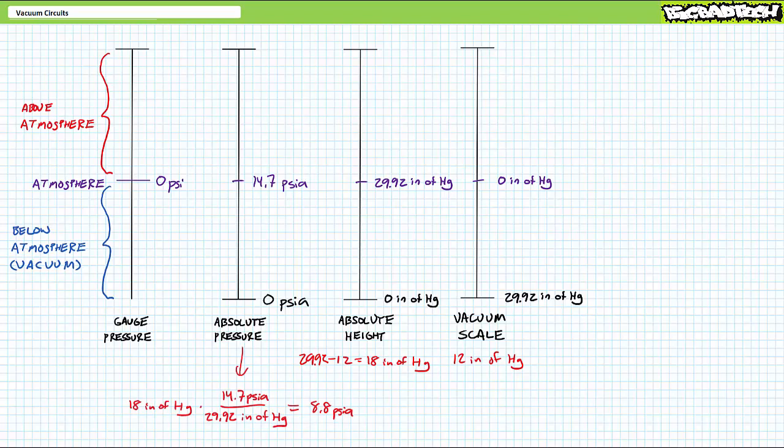Now it's just regular unit conversion, where 14.7 PSI absolute is equal to 30 inches, 29.92 inches to be exact. The unit we want PSI absolute is on top. The unit we don't want inches of mercury is on the bottom. The units we don't want cancels out. We're left with roughly 8.8 PSI absolute.